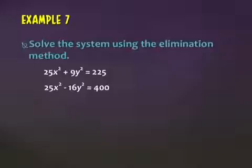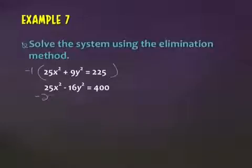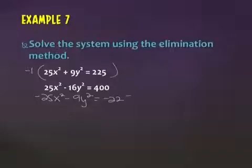Directions this time say solve using elimination. If I add them, do they cancel? No — I've got to change one of them. I could multiply the top one by negative one. Would it matter which one I change? No. So negative 25x squared minus 9y squared equals negative 225.